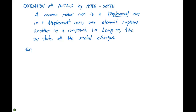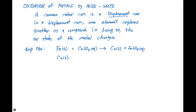Let's take a look at some experimental observations. We find that if we take a solid strip of iron metal and place it in a copper sulfate solution, over time we're going to observe the products of copper metal plus an iron sulfate solution. But if we try the reverse — taking copper solid and putting it in a solution of iron sulfate — we observe no reaction.